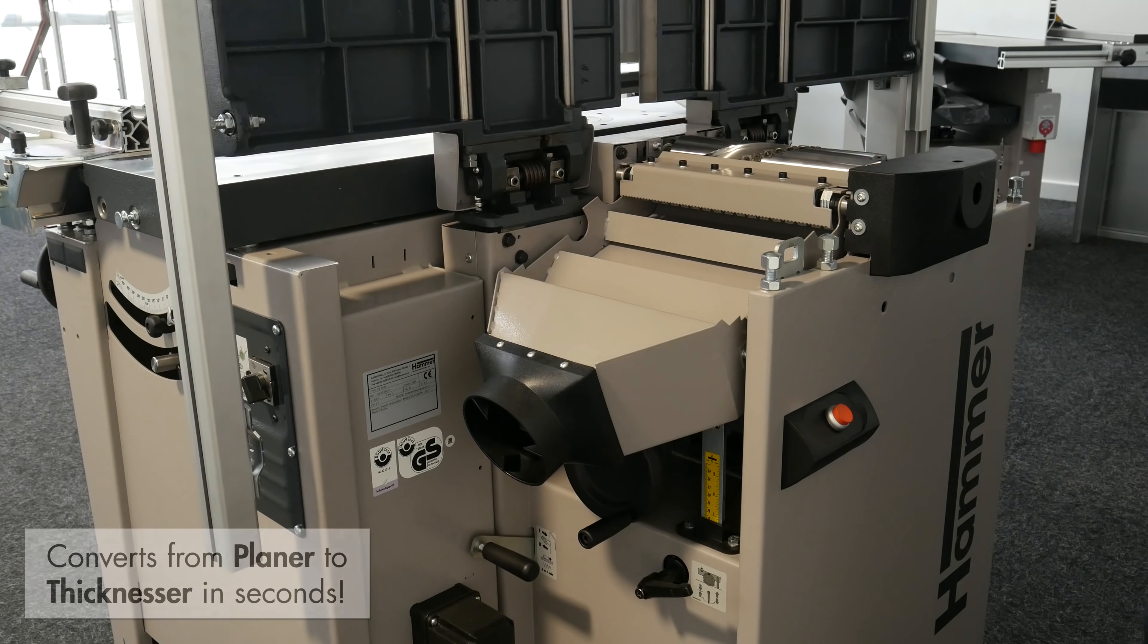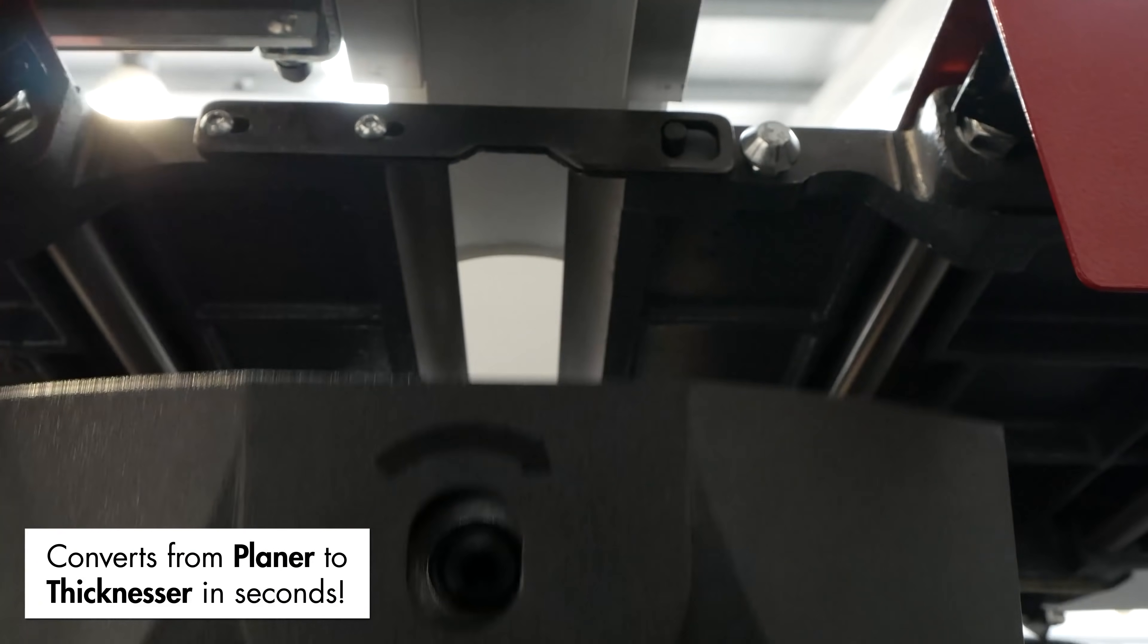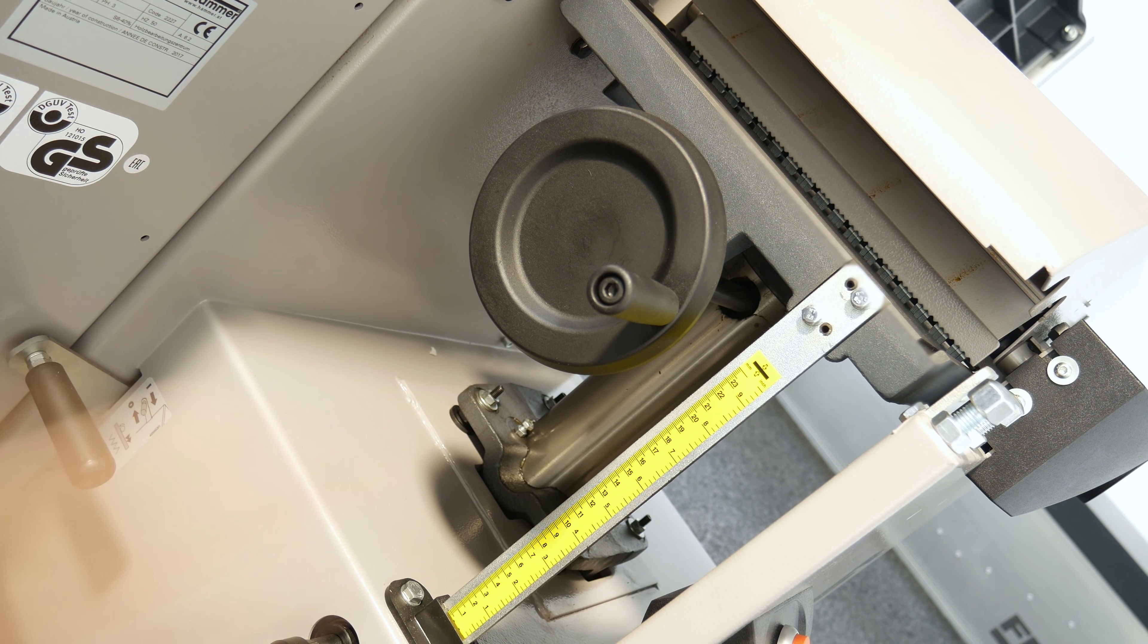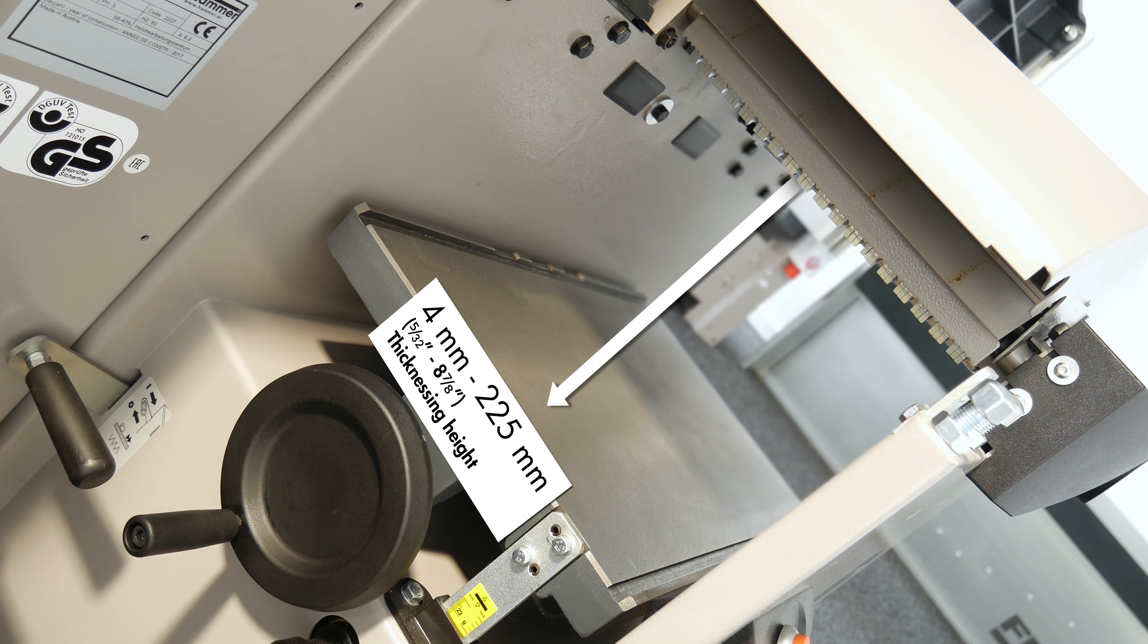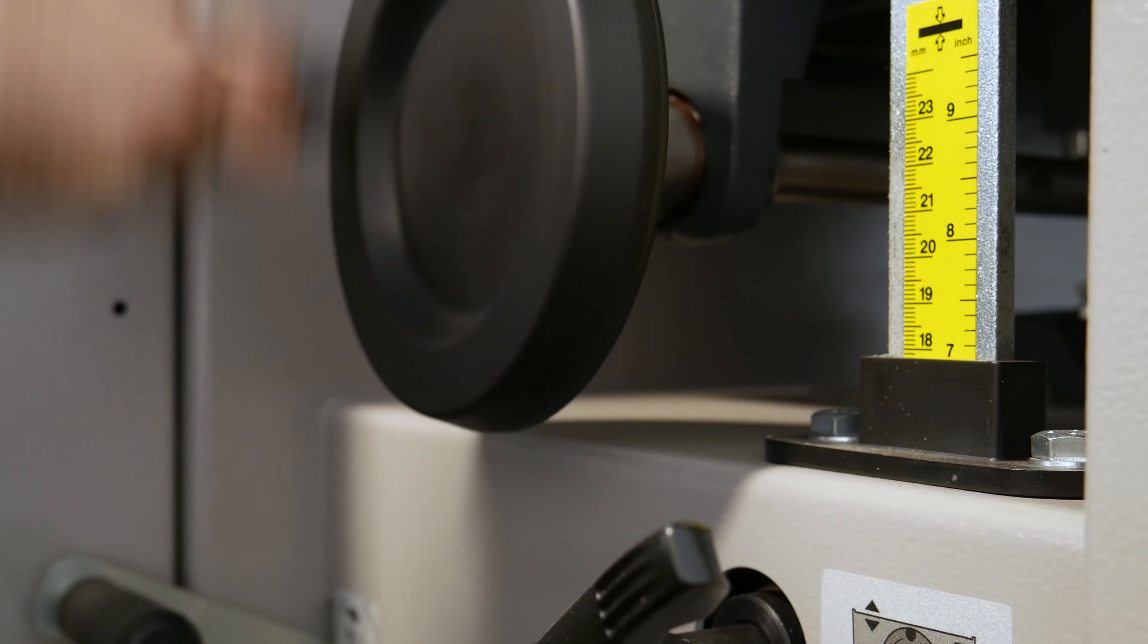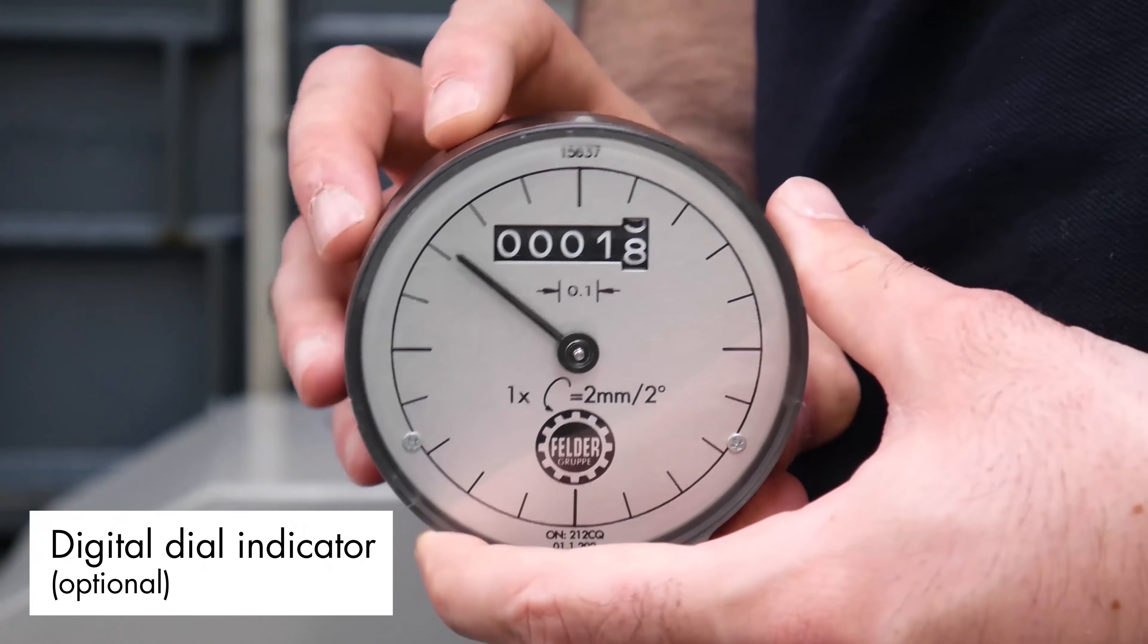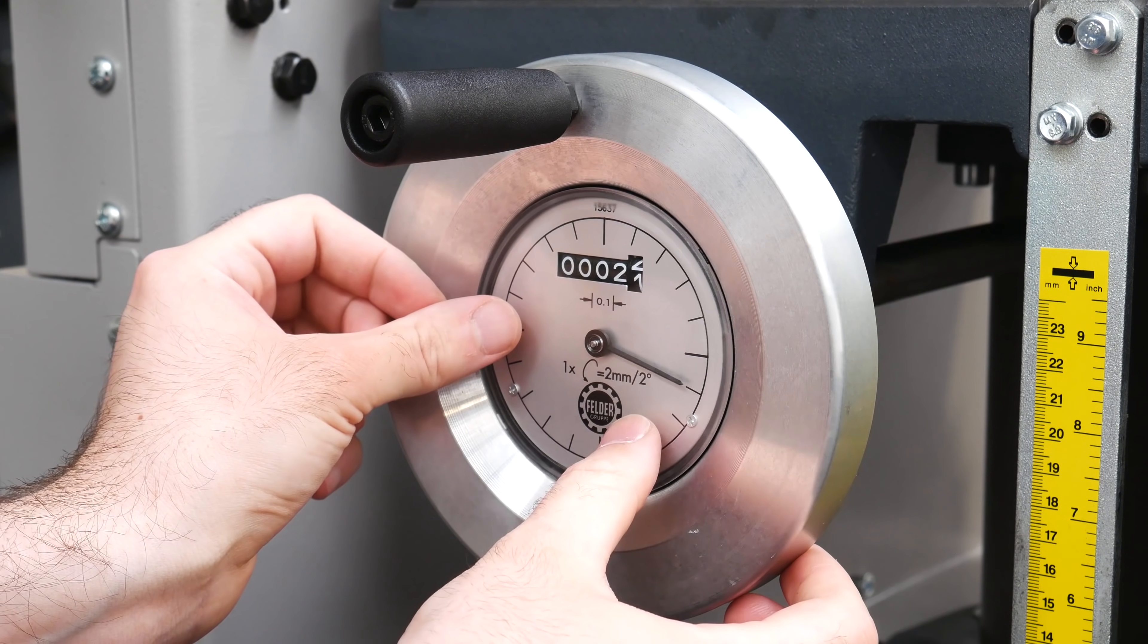Converting the C331 from planer to thicknesser takes seconds, thanks to the dual-lifting planer tables and ergonomically designed extraction hood. The thicknesser has a cutting height from 4 to 225mm that is adjusted using the handwheel and adjacent guide rule. For added convenience and accuracy, the handwheel can be upgraded to include an integrated digital dial indicator, making fine adjustments of one-tenth of a millimeter quick and easy to carry out.